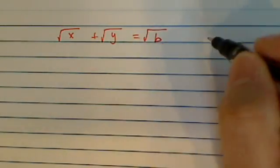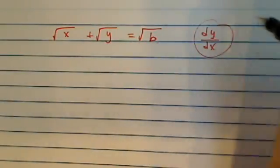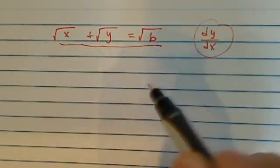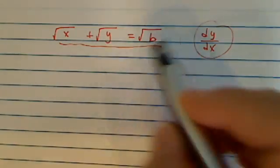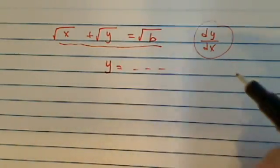We're supposed to find the derivative of y here. Now this form is written implicitly. That's saying that we don't have a form that says y is equal to specifically what x is.